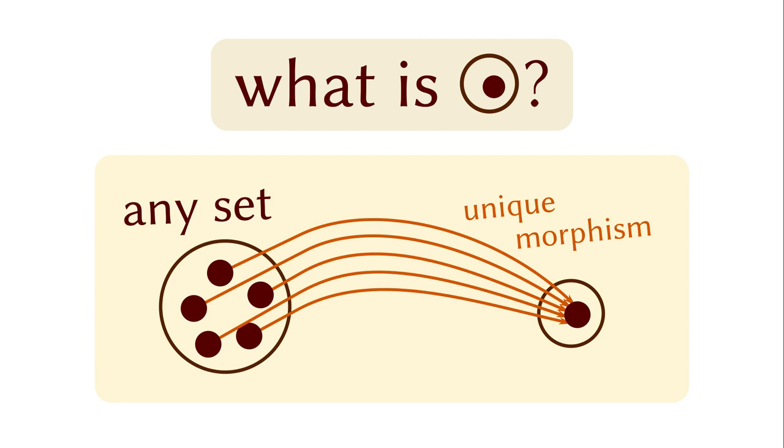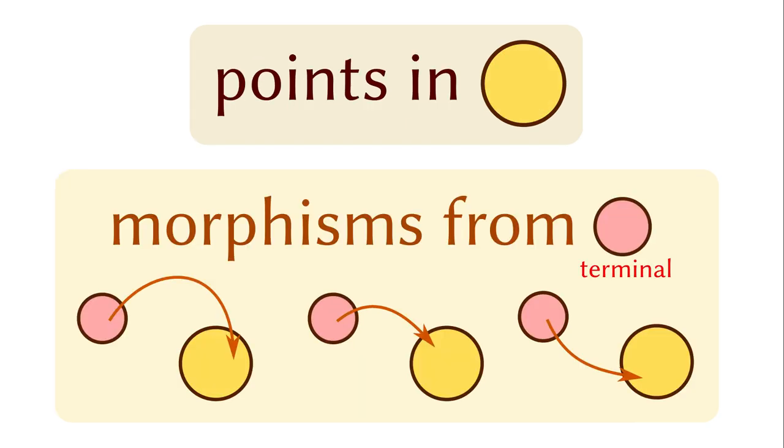What's a singleton set? It's a set such that there is a unique morphism from any set, including itself. In category theory, an object satisfying this property is called the terminal object. We thus can redefine points as morphisms from the terminal object. The important thing is that the definition works for any category.